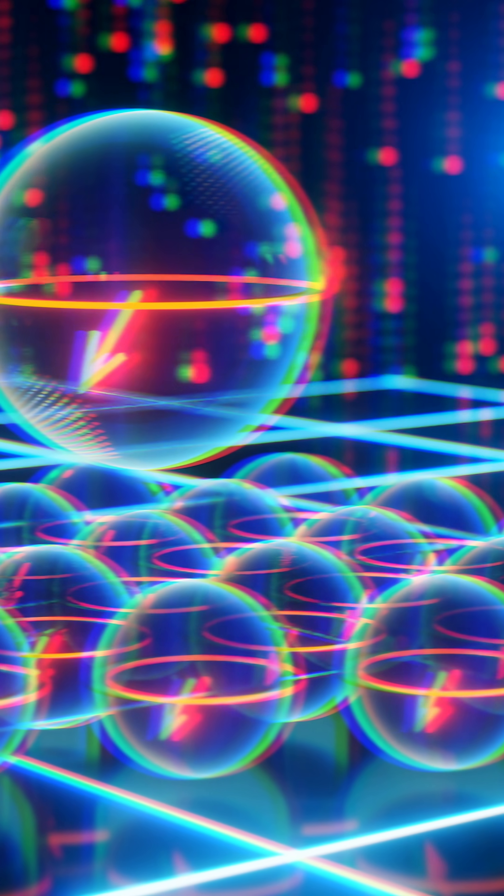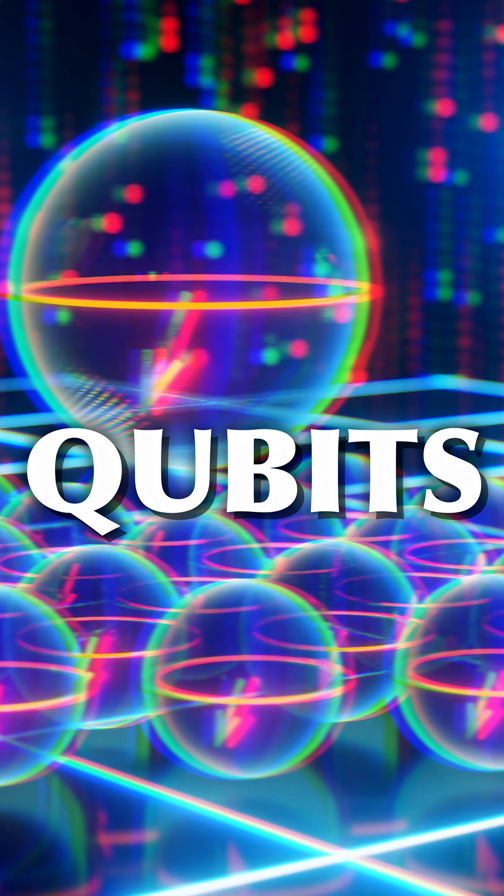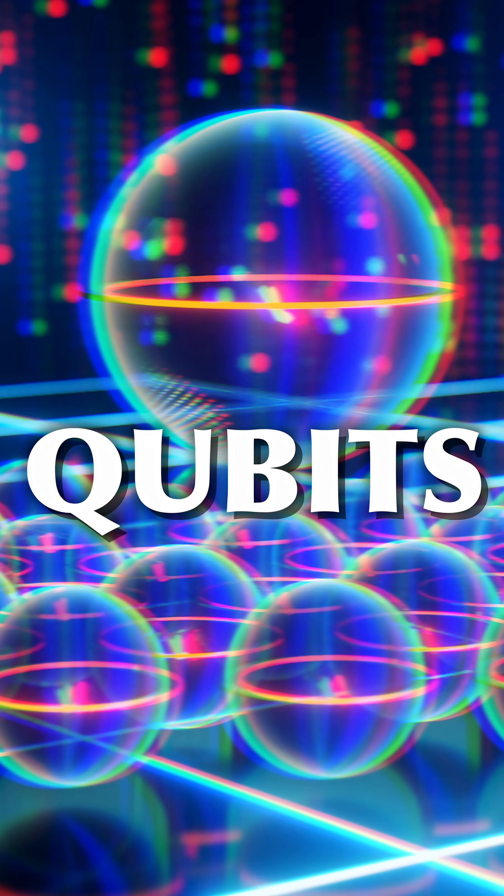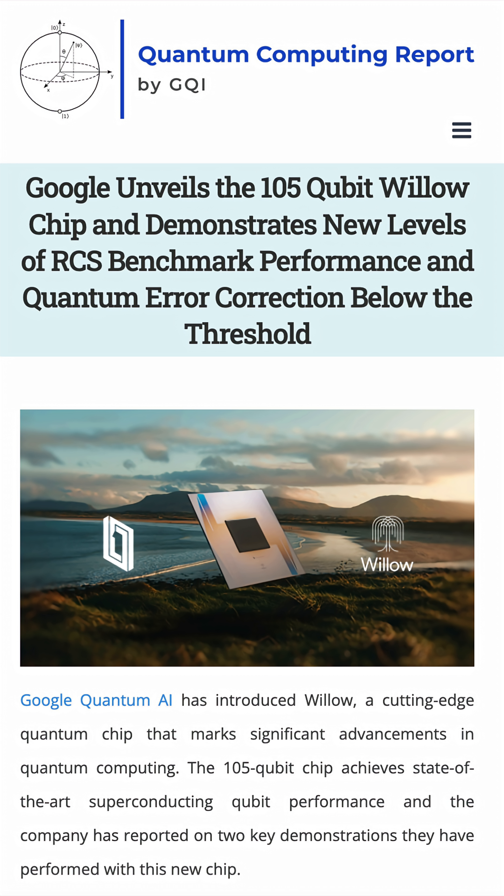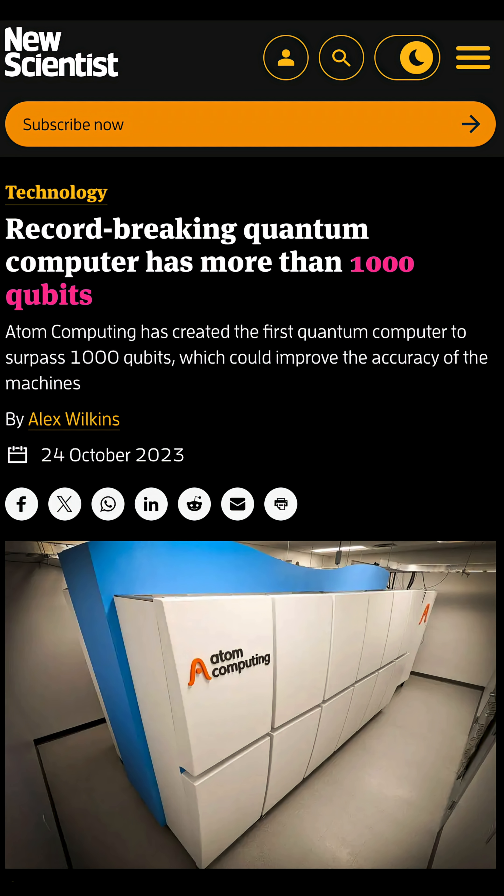One way to quantify what small means is the number of qubits. Qubits are the building blocks of quantum computers, much like bits are with classical computers. Currently, we have quantum computers with between 20 and 100 useful qubits. We can create more qubits than that, but their quality will be too low for actual computations.